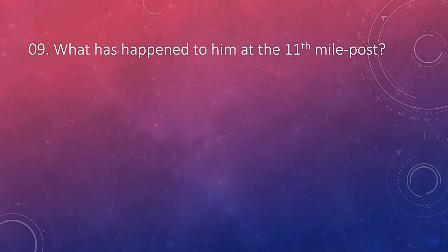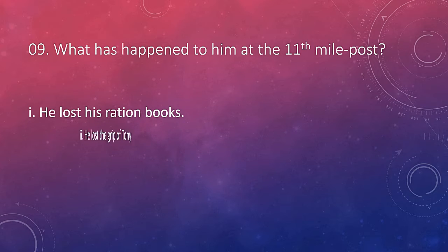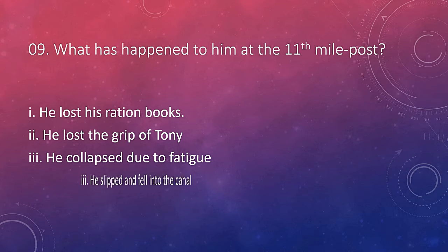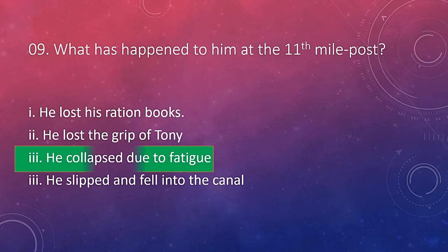Question number nine: what happened to him at the 11th milepost? The answer is he collapsed due to fatigue. As you know, this small boy was suffering from occasional fits. Due to his condition, he was not sent to school. When one gets fits, his muscles become stiff like the state of paralysis. On the day of his adventure, he had not taken his regular meal because of hunger and fatigue. At the 11th milepost he gets his occasional fits; however, he acted wisely to overcome the severe condition by lying on the ground and having a rest.